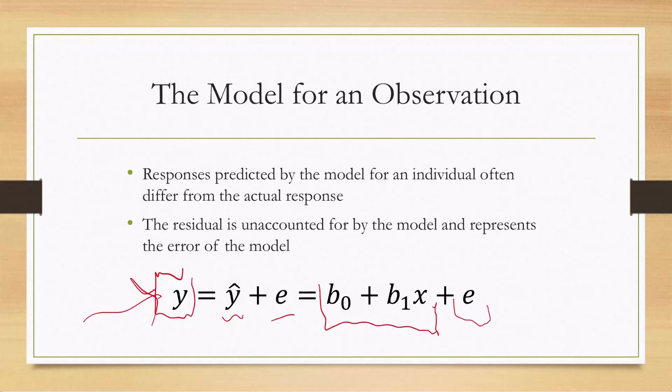Of course, you don't know what the residual is until you look at your observation — you need both your prediction and your actual observation. This is a mathematical equivalency that helps us understand regression as having an explained part and an unexplained residual part; it's not a new way to arrive at your observation, since you can't calculate e without having the observation first.